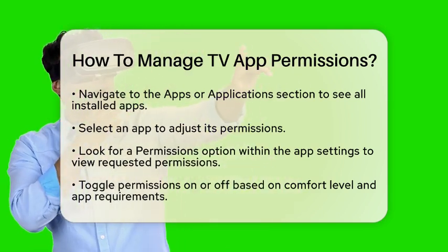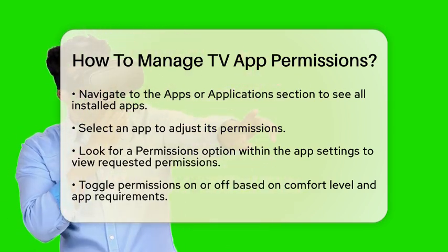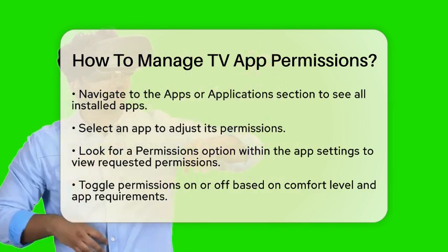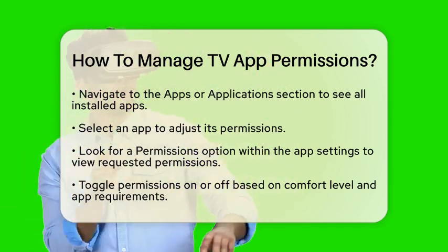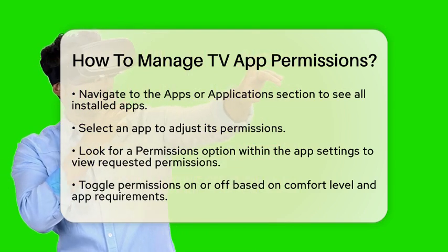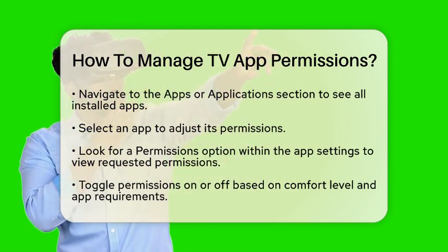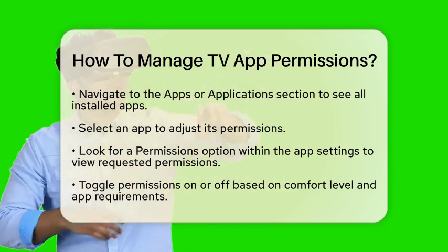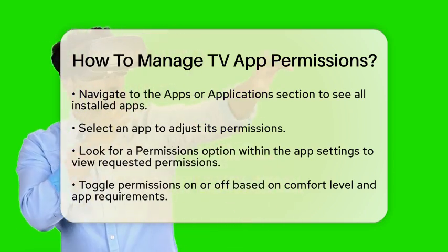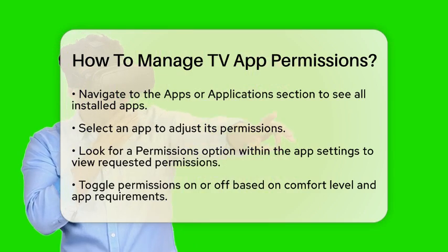Once you are in the app settings, look for a permissions option. This section will show you what permissions the app has requested or been granted. Common permissions include access to the microphone, camera, location, or storage. You can toggle these permissions on or off based on your comfort level and the app's needs.